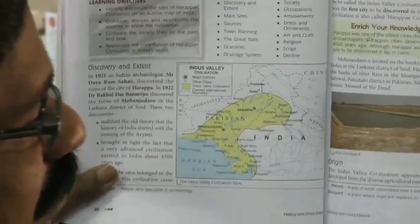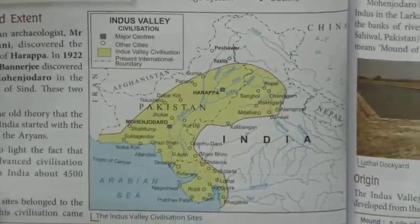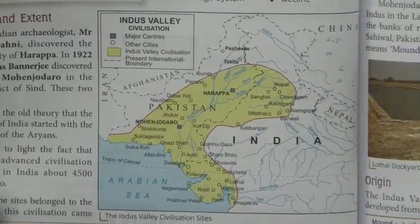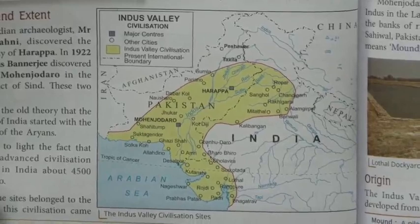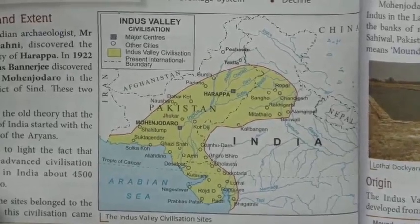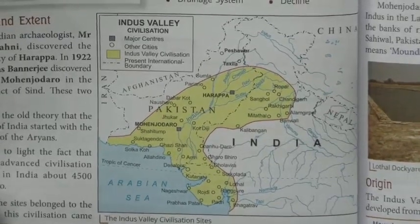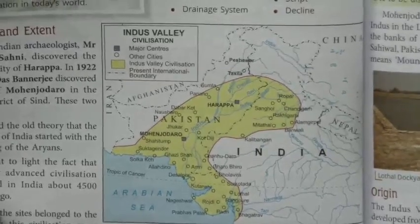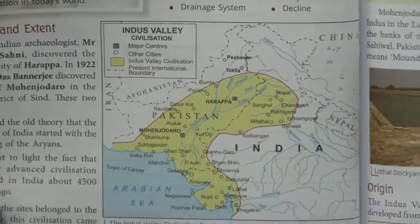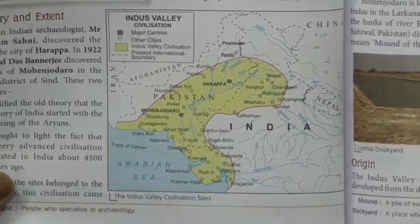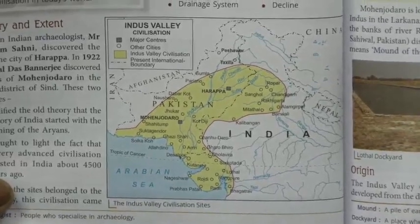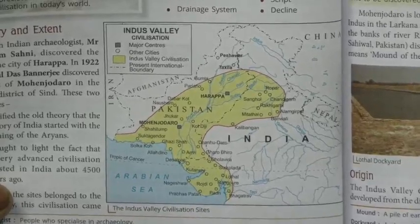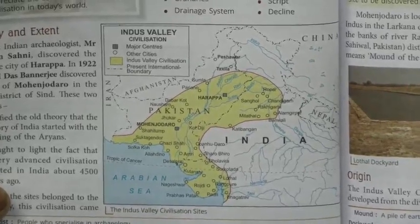See the map here — can you see the map? You can see India and Pakistan, and the yellow region is where the Harappan civilization developed. It would be good if you can draw this map in your classwork copy.